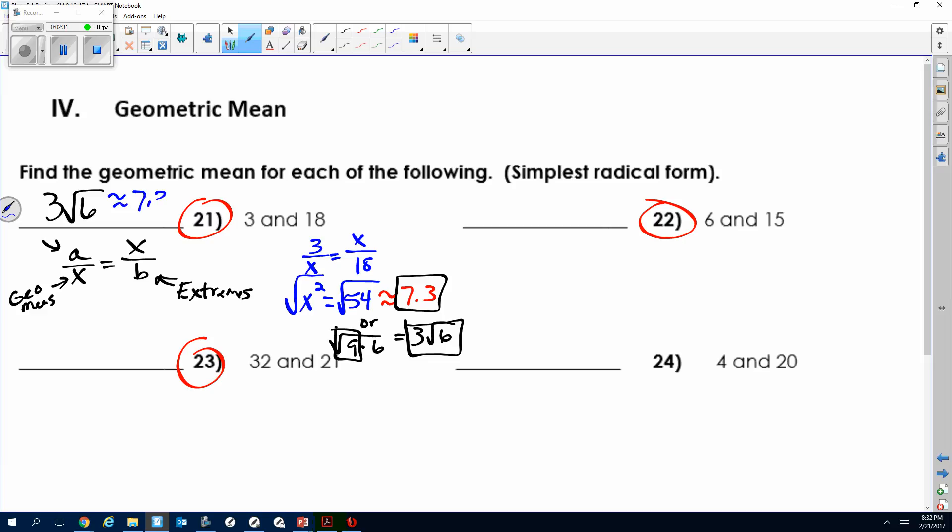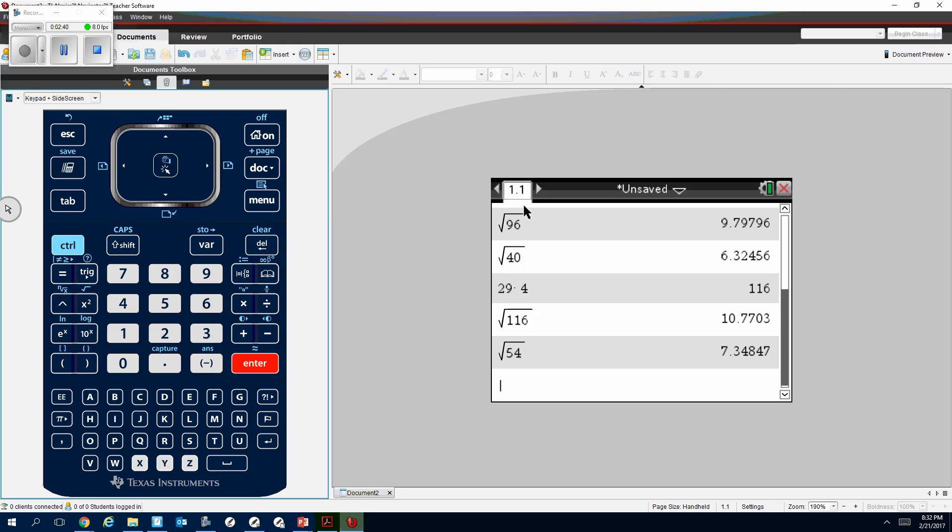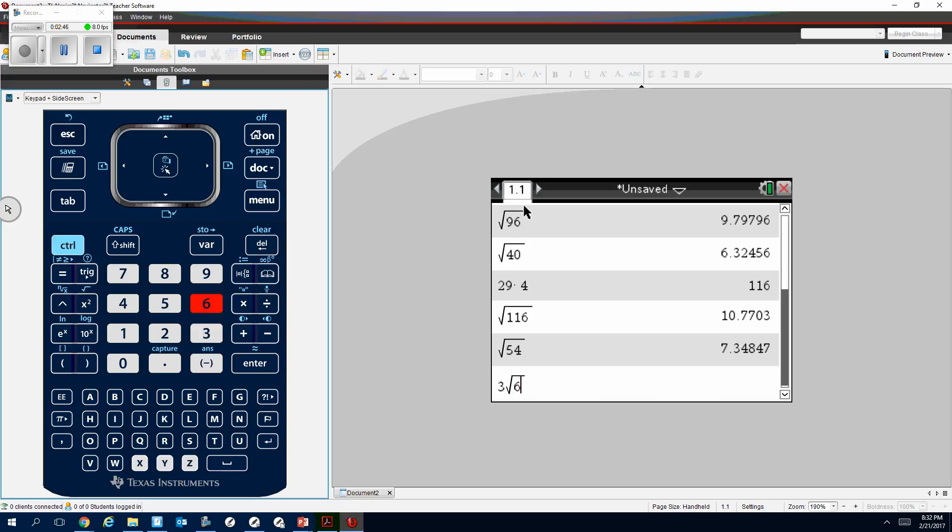And this is approximately 7.3, which is what you could do. Let's say you didn't get it simplified right—you can check to see if you get the same decimal. Meaning I know that it's supposed to be 7.3. If I type in 3 times the square root of 6, yep, I get the same approximation, so I know I did it right.